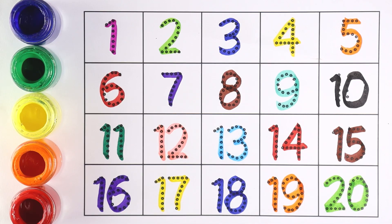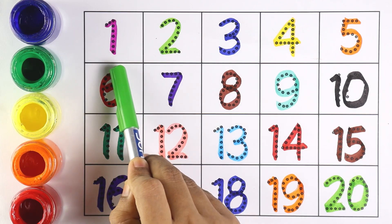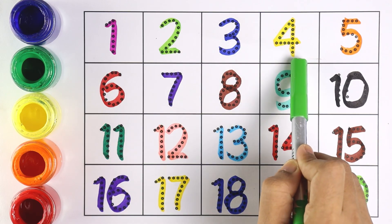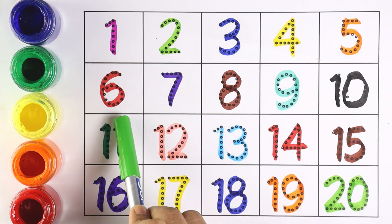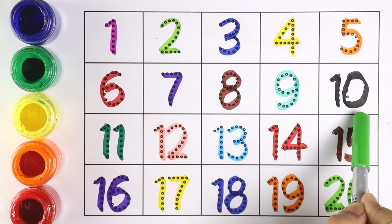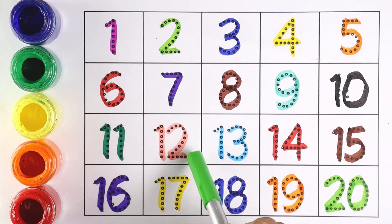Now shall we all count from 1 to 20. Let's begin. 1, 2, 3, 4, 5, 6, 7, 8, 9, 10, 11, 12, 13, 14, 15, 16, 17, 18, 19, 20.